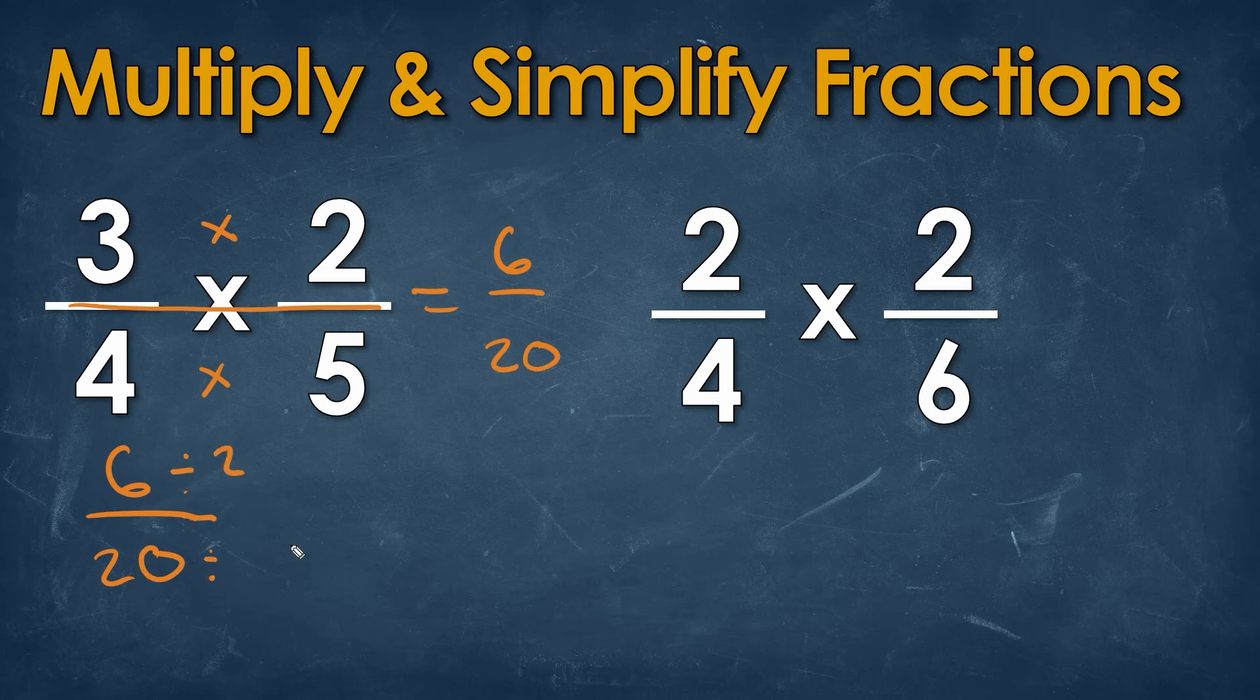We know we can divide by 2, and it doesn't have to be the biggest number you can find, as long as you know that there's a number that we can. We know that that's going to be 2. 6 divided by 2 will be 3. 20 divided by 2 will be 10.